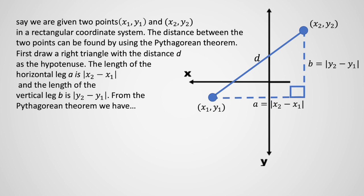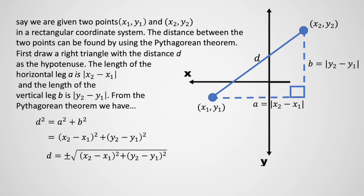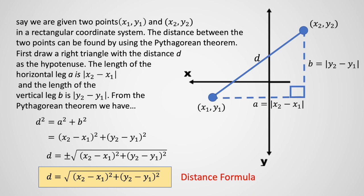From the Pythagorean theorem, we have d squared is equal to a squared plus b squared. Now let's substitute those values: d squared equals x sub 2 minus x sub 1 quantity squared plus y sub 2 minus y sub 1 quantity squared. Taking the square root gives us both positive and negative values, but since we are speaking of distance, we disregard the negative value. So we have the distance formula.